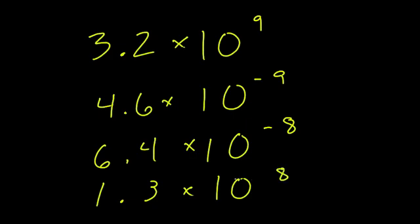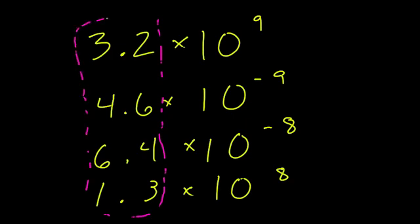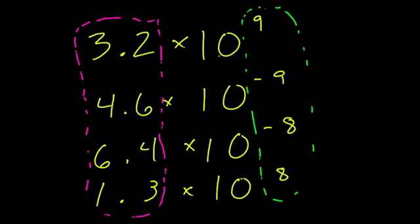So what number here has the smallest value? First of all, since all of our numbers here are positive, we can use a simple algorithm for comparing in scientific notation. All we have to do is look at these exponents and figure out which is the smallest — that will be our smallest number. That's only because our starting value here is positive.